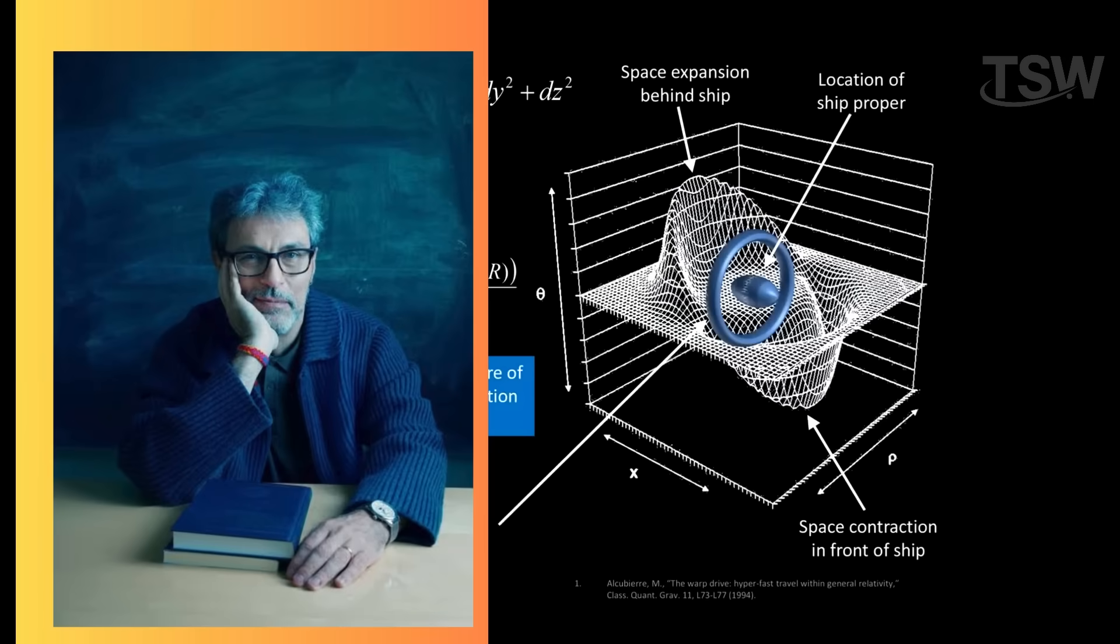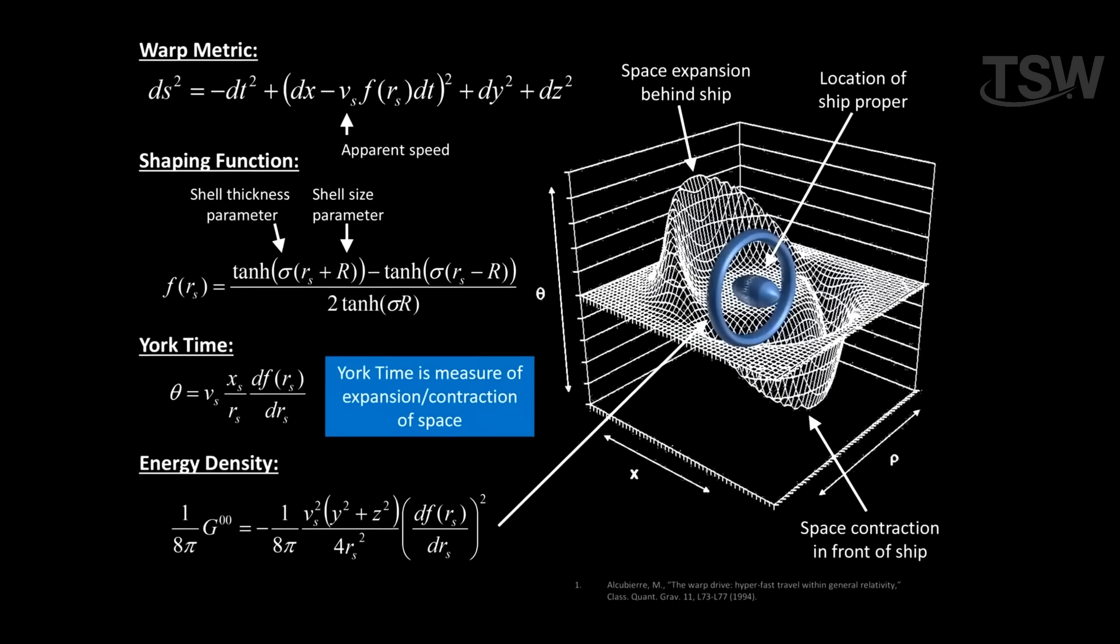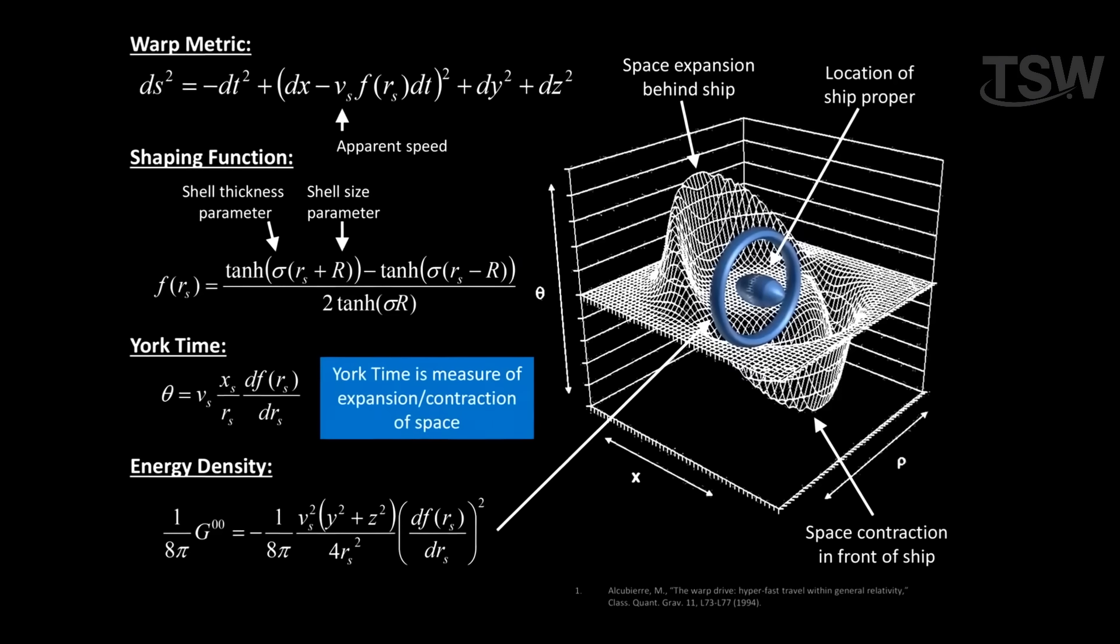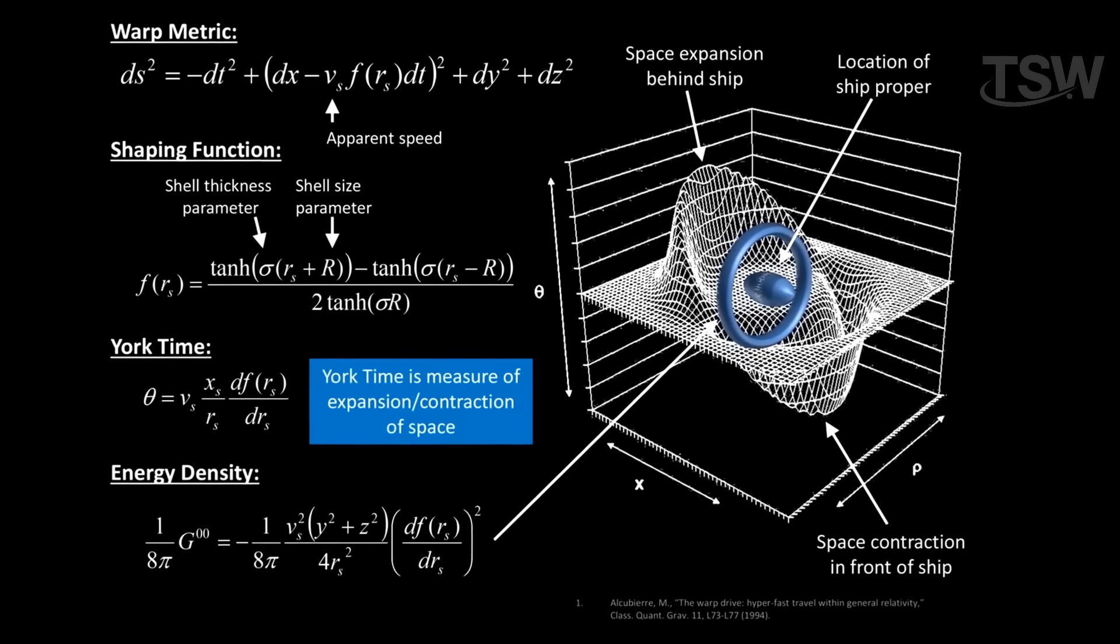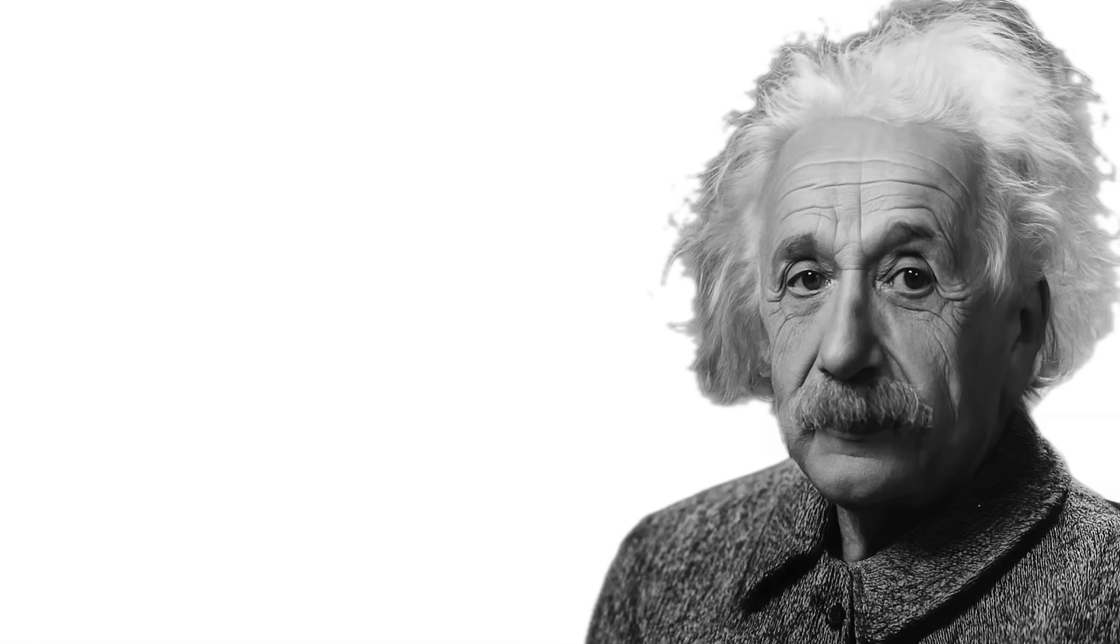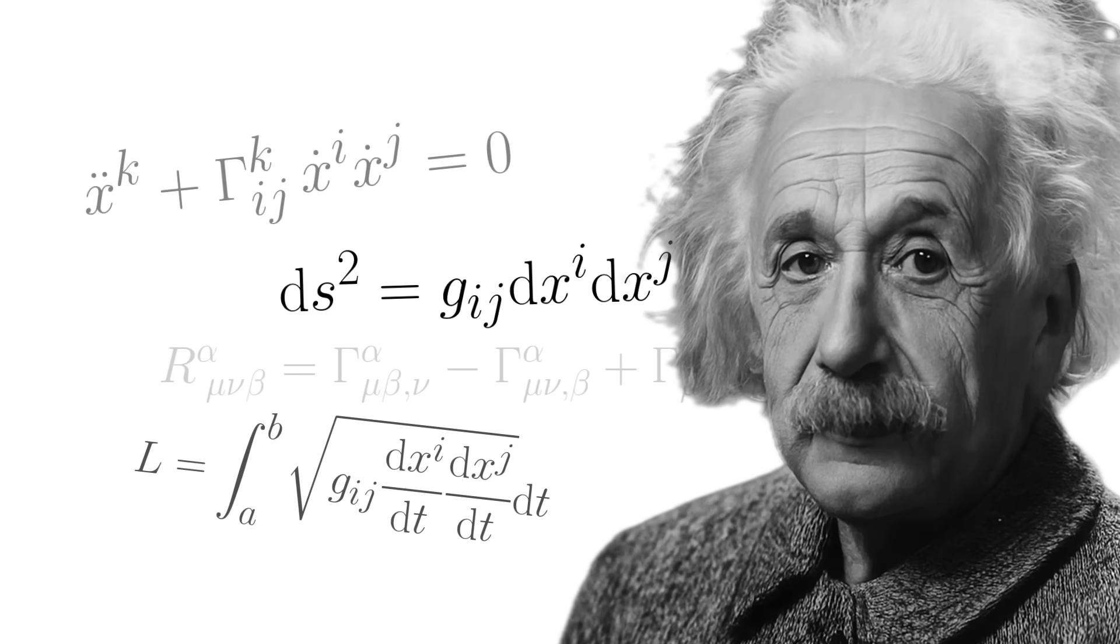In 1994, a Mexican physicist named Miguel Alcubierre, who happens to be a Star Trek fan, proposed a revolutionary concept. Still a PhD student at the time, he published a paper demonstrating that, by manipulating Einstein's equations of general relativity, it would be possible to create a warp drive.